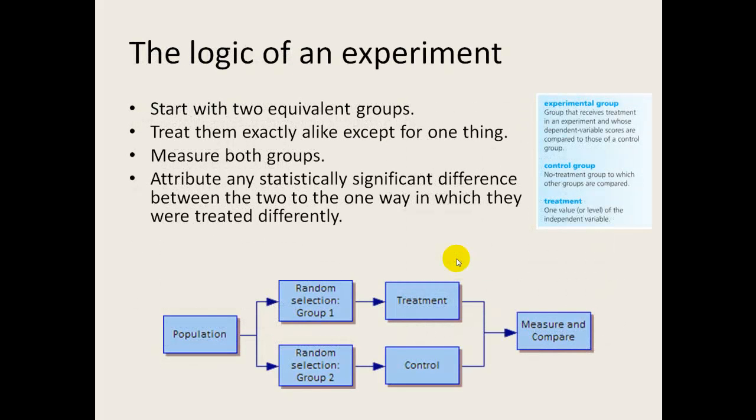The basics of an experiment are that you're going to start with two equivalent groups. Equivalent meaning that they're similar on the dependent variable of which you're interested. Then you're going to treat them exactly alike except for one thing. After that, you measure both groups so that you can attribute any statistically significant difference between the two groups on that dependent variable to the way in which they were treated differently.